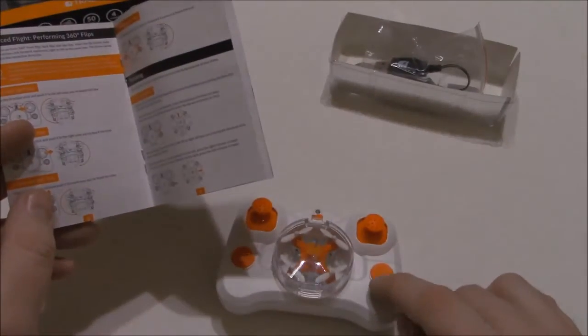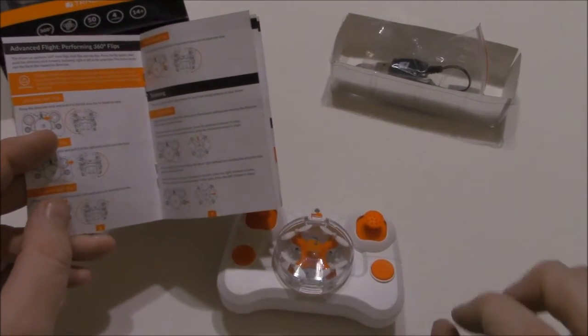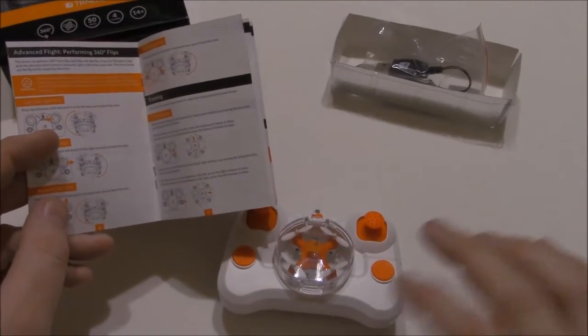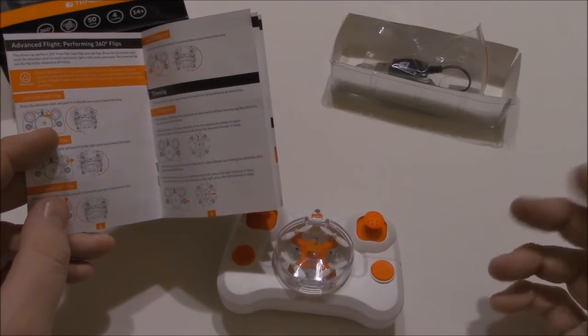Directional trim. This little button right here. If the drone seems to be flying to the right, left, forward or backward a little bit without you actually changing the direction, you just press the buttons and it will adjust itself.